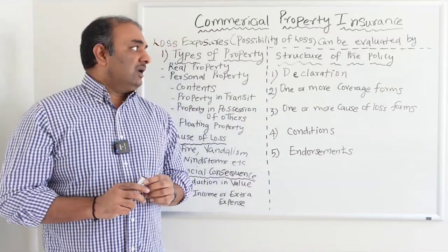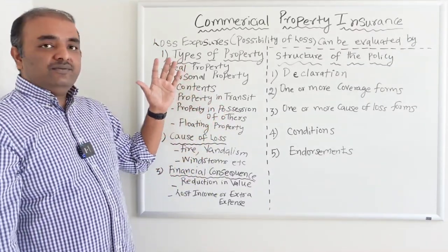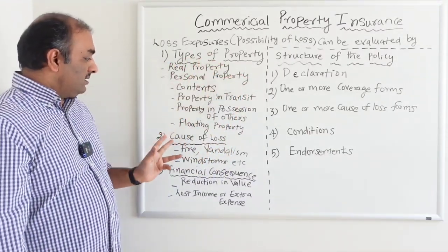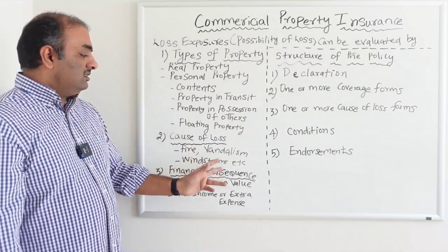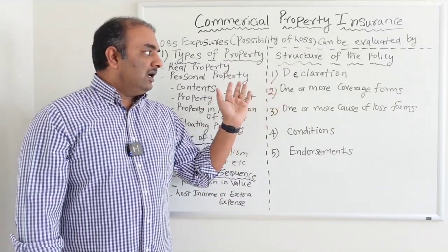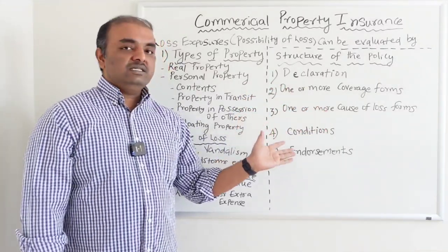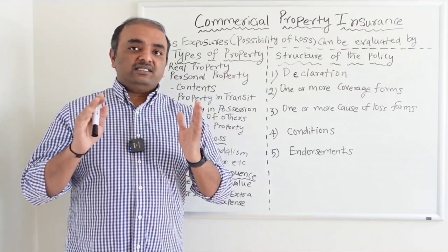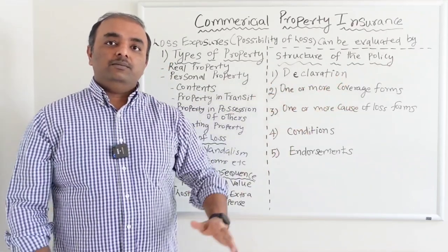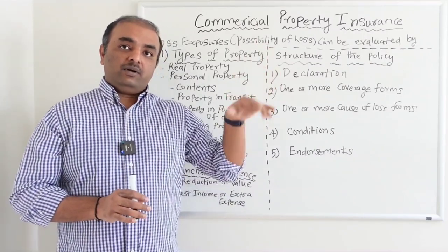To summarize what we covered today: the different possibilities of loss include types of property, cause of loss, and financial consequences. The structure of a commercial property policy starts with the declaration page, followed by one or more coverage forms, one or more cause of loss forms, conditions, and endorsements. In our next session, we will cover one of the most commonly used forms — the Building and Business Personal Property coverage form under commercial property.